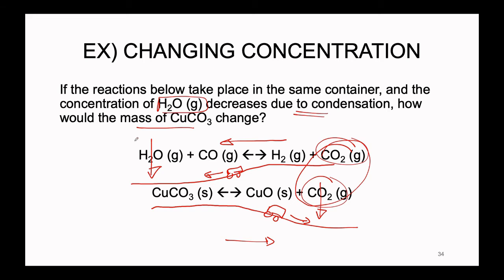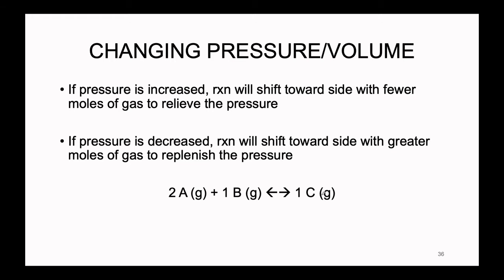So if we decrease the water vapor concentration, the first reaction shifts left, removing carbon dioxide. The second reaction then shifts right to create more carbon dioxide in response. As that second reaction shifts from left to right, we lose our solid reactant — copper carbonate. In other words, losing water vapor due to condensation ultimately decreases the mass of copper carbonate, as it is forced to decompose into copper oxide and more carbon dioxide.